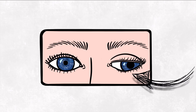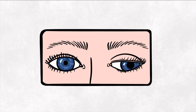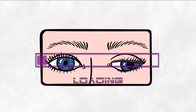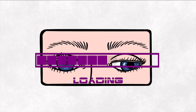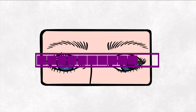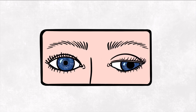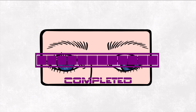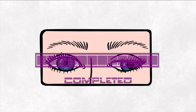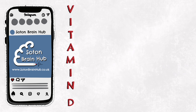Third nerve refers to the third cranial nerve, also known as the oculomotor nerve, and palsy means a lack of function. If you're interested in examination of the cranial nerves, check out our video on that in the description.